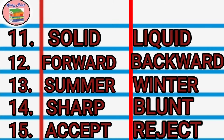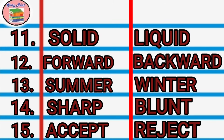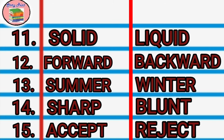Number eleven: solid, liquid. Forward, backward. Summer, winter. Sharp, blunt. Accept, reject.